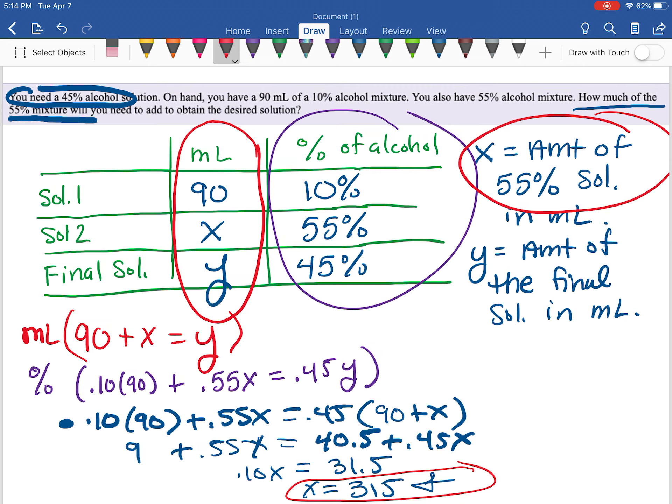And remember what that x represents. If we come back up here and look to see how we defined x, x was the amount of the 55% solution. So that means there's 315 milliliters of the 55% solution.